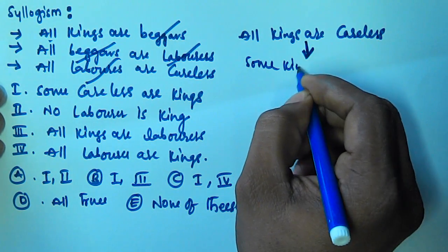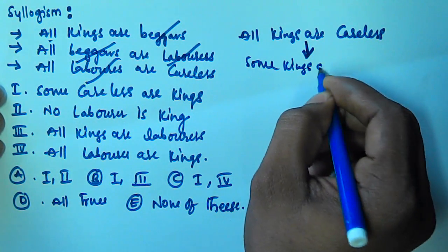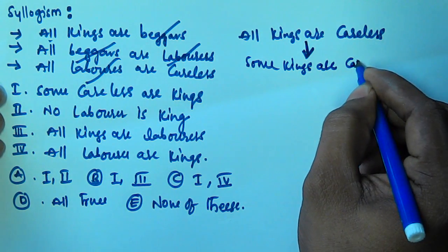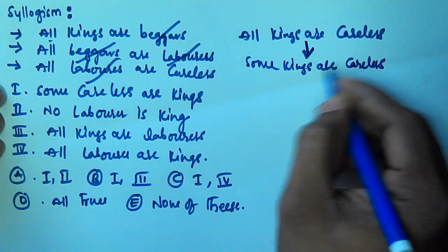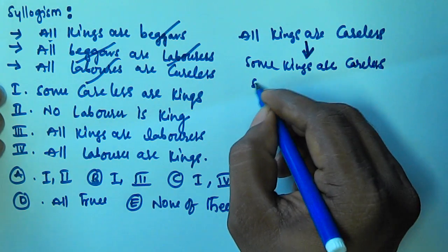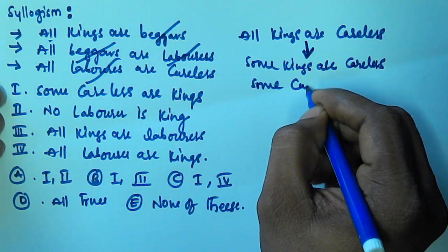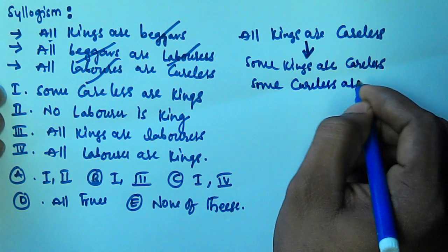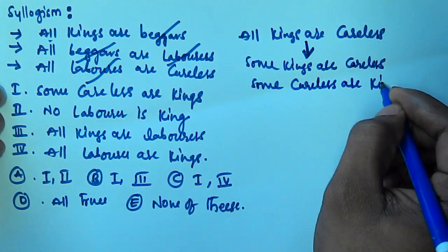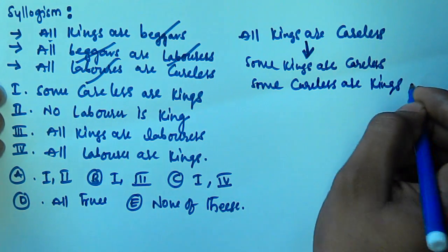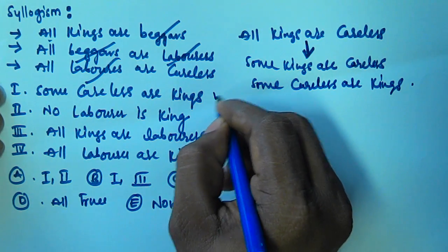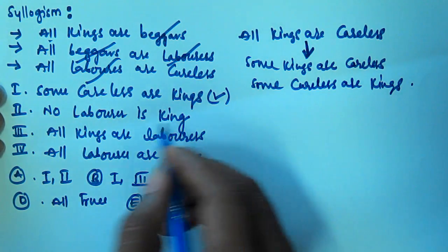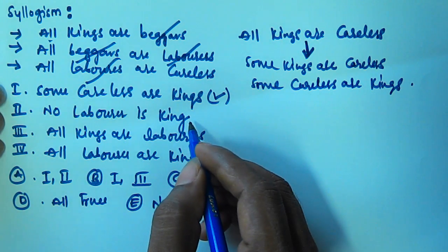If all kings are careless, then some kings are careless is also true, and some careless are also kings. So from this it is clear that the first conclusion is true: some careless are kings.